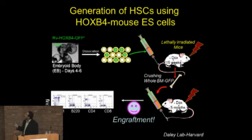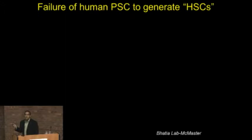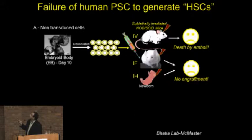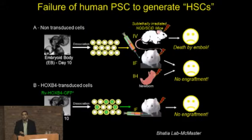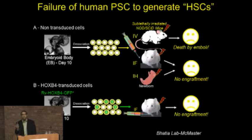When one does this with human cells, you can dissociate these cells and transplant multiple ways — IV, intrafemoral, even intrahepatic injections — but we see no engraftment. When we also attempted the Hoxb4 experiment via retrovirus, lentivirus, and TAT fusions, we never saw any sizable engraftment. You see what I call microchimerism — small numbers of cells that linger — but certainly not the robust reconstitution you'd see from bone marrow or cord blood. That's the gold standard we have to compare against.